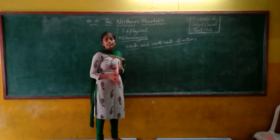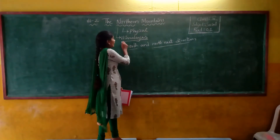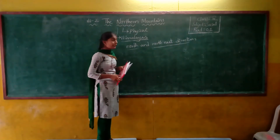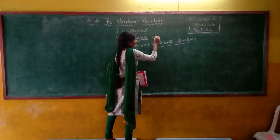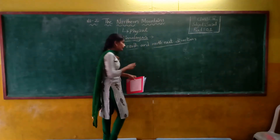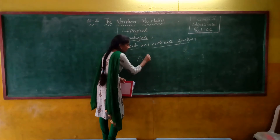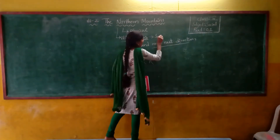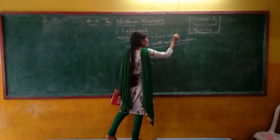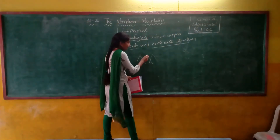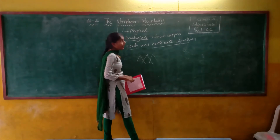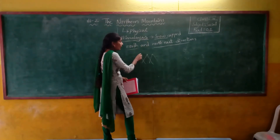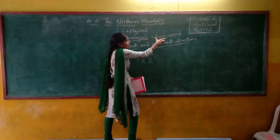This mountain range is called the Himalayas. The mountain range is particularly covered with snow. How do the mountains look? The mountains are snow-covered. The top point of a mountain is called a peak. The peaks are also covered with snow. So it means that in the Himalayas, the mountains are covered with snow.